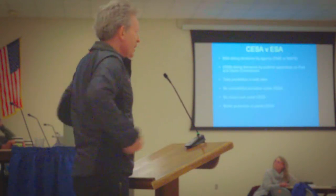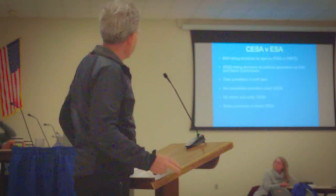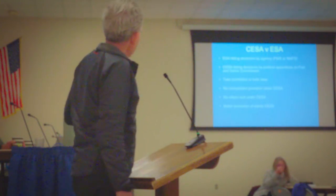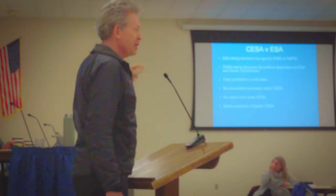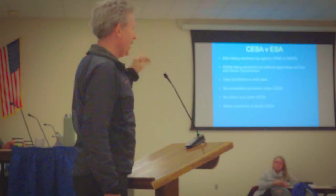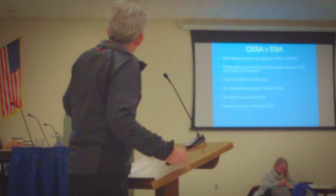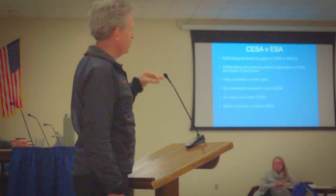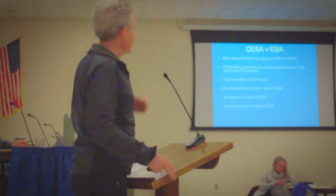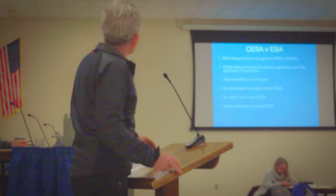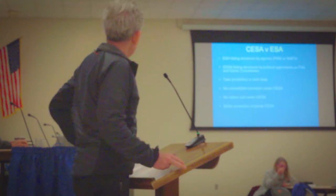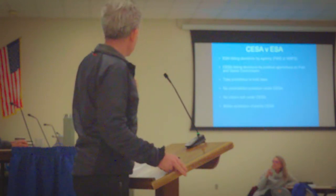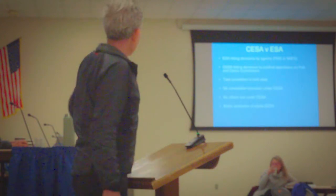The California Endangered Species Act parallels the Federal Endangered Species Act in many ways but differs. One of the most fundamental is that under federal law, the decisions are made by a theoretically scientific agency based clearly on science. Under state law, the scientific agency makes recommendations, but the actual decision is made by the California Fish and Game Commission through a public hearing process — and those are political appointees. There are take prohibitions under both laws, but under CESA there's no equivalent consultation provision for state agencies.